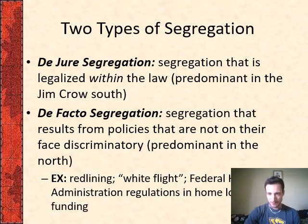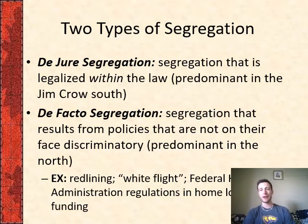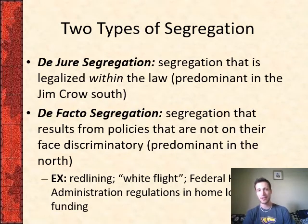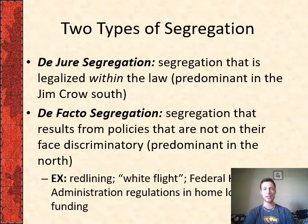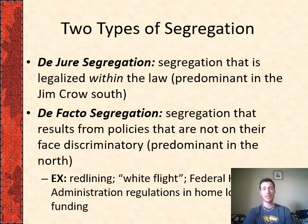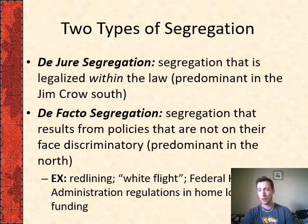I want to clarify some important vocabulary for understanding this time period. There are two types of segregation that historians and sociologists tend to look at. The first and most obvious is called de jure segregation, which is where it's legalized within the law. When you think of Jim Crow laws in the South, that's what you're thinking of — things that specifically within the legal system separate African Americans, like having segregated schools, water fountains, and parks.